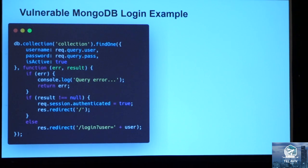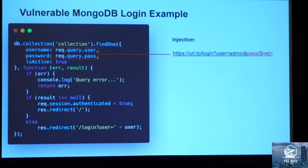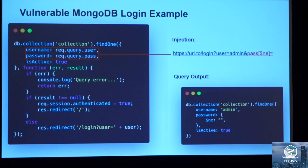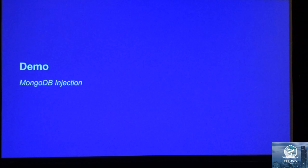Let's take a quick look at a MongoDB example. We have this findOne collection query, and this is coming from user input because we have request.query.user and password. The injection would be including a $NE on the password field, which converts the query to say the password is not equal to an empty string. Since 99% of the time the password is not going to be an empty string — it is going to be either a hashed password or clear text password — this allows a bypass.